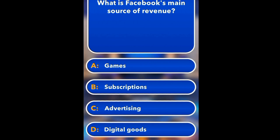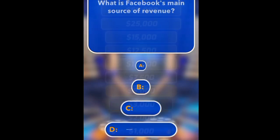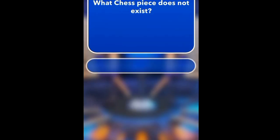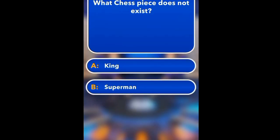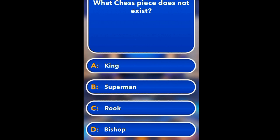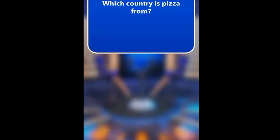In which country was coffee first used as a beverage? Argentina, Cuba, China, Jamaica. China. What is paper made from? Metal, leather, trees, sand. Trees.